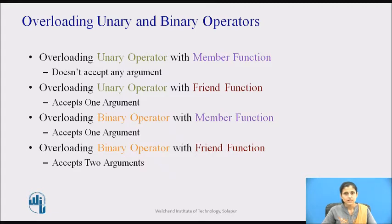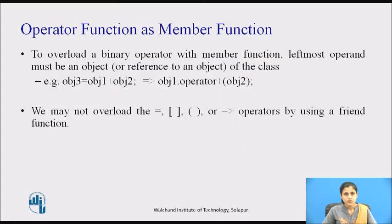When overloading a binary operator using a friend function, the left operand is passed as the first argument and the right operand is passed as the second argument. When we overload a binary operator using a member function, the leftmost operand must be an object or reference to an object of the class. The object on the left side of the operator generates the call to the operator function.